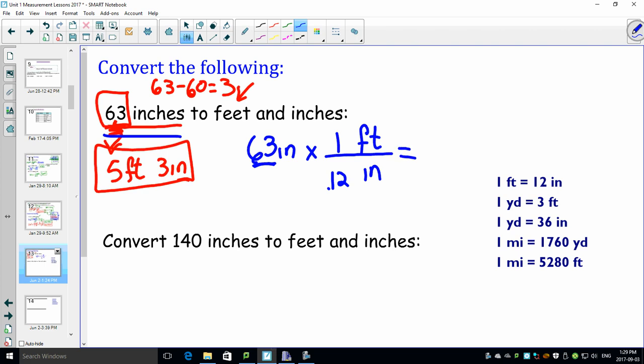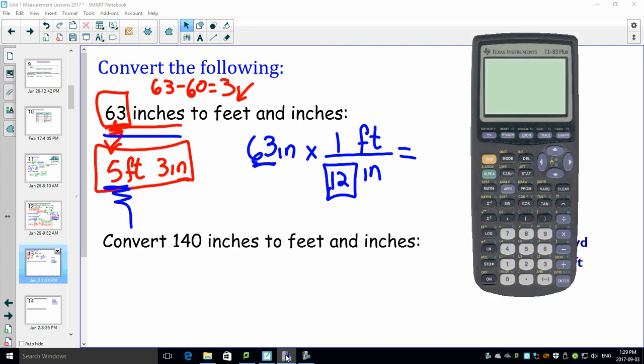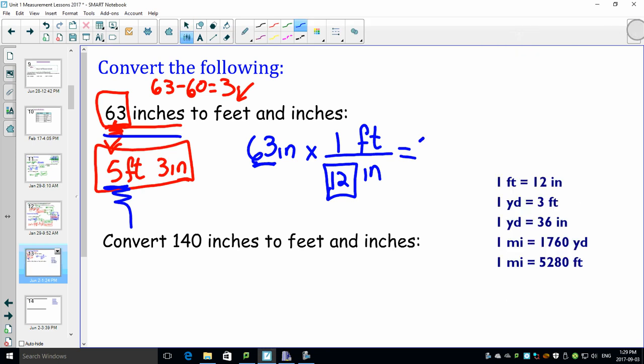Now, 63 divided by 12 here, guess what you're going to get? You're going to get five, but you're also going to get a remainder. I'll prove it to you. Bring up the calculator. Here's the calculator. Clear this guy out. Here we go. I'm going to go 63 divided by 12, and I'm going to get an answer of 5.25. Wait a second. This is 5.25. Wait a minute. That means this is 5 feet and 0.25 of a foot.